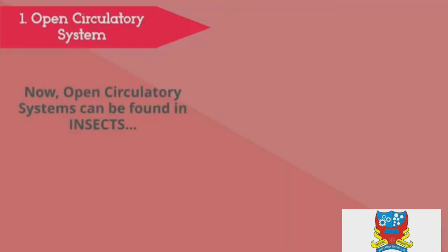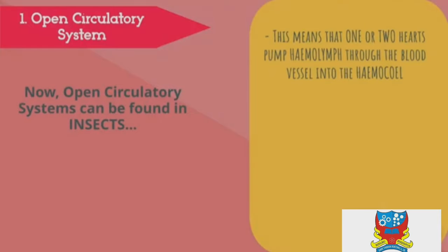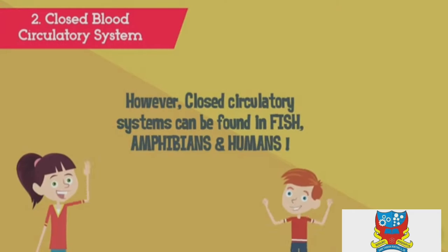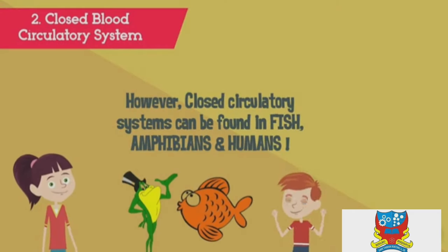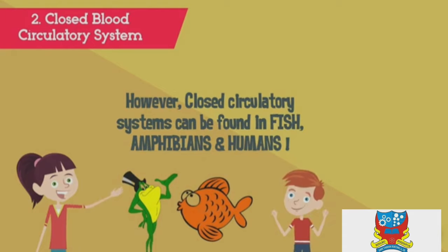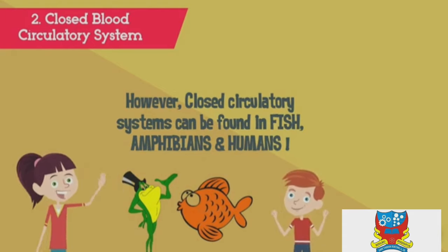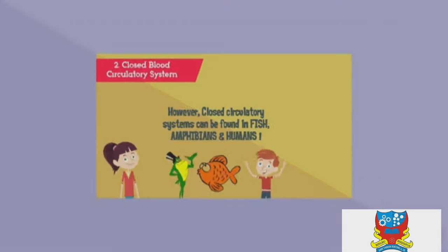Open circulatory systems are found in insects, where one or two hearts pump haemolymph through blood vessels into the haemocoel. Closed circulatory systems, on the other hand, are found in fish, amphibians, and humans.